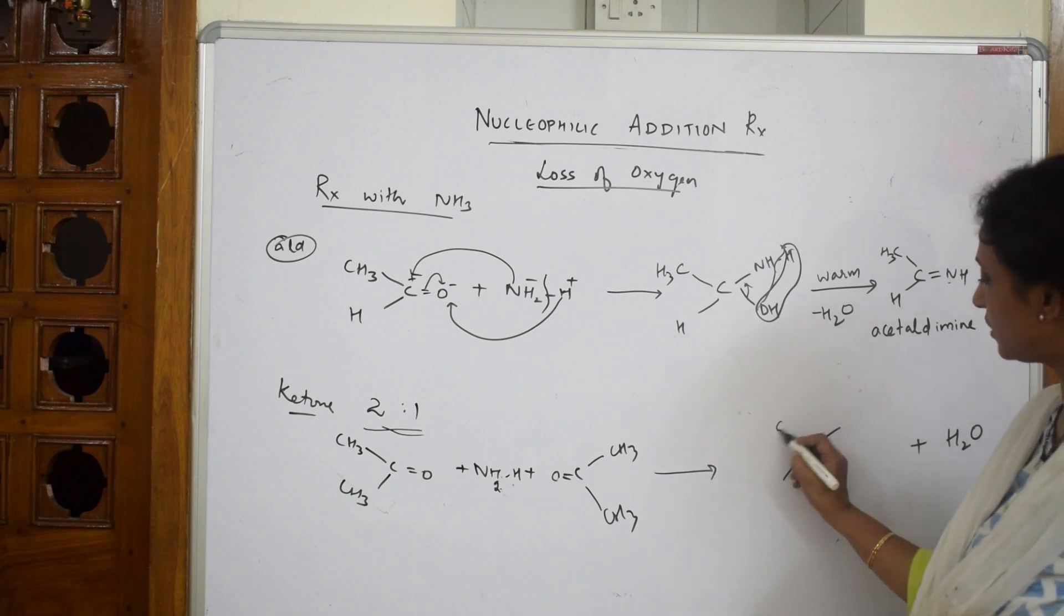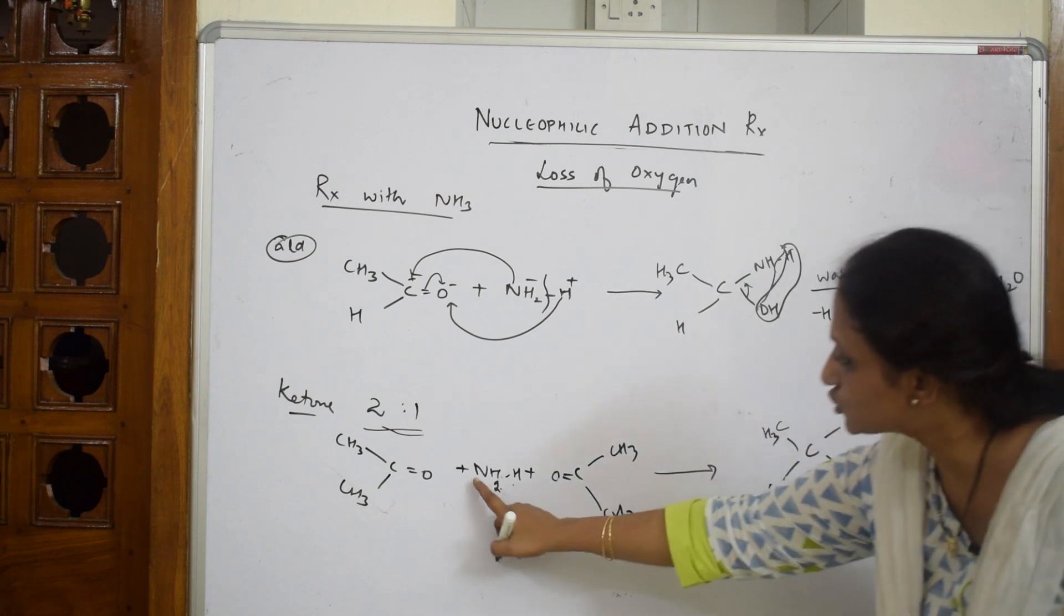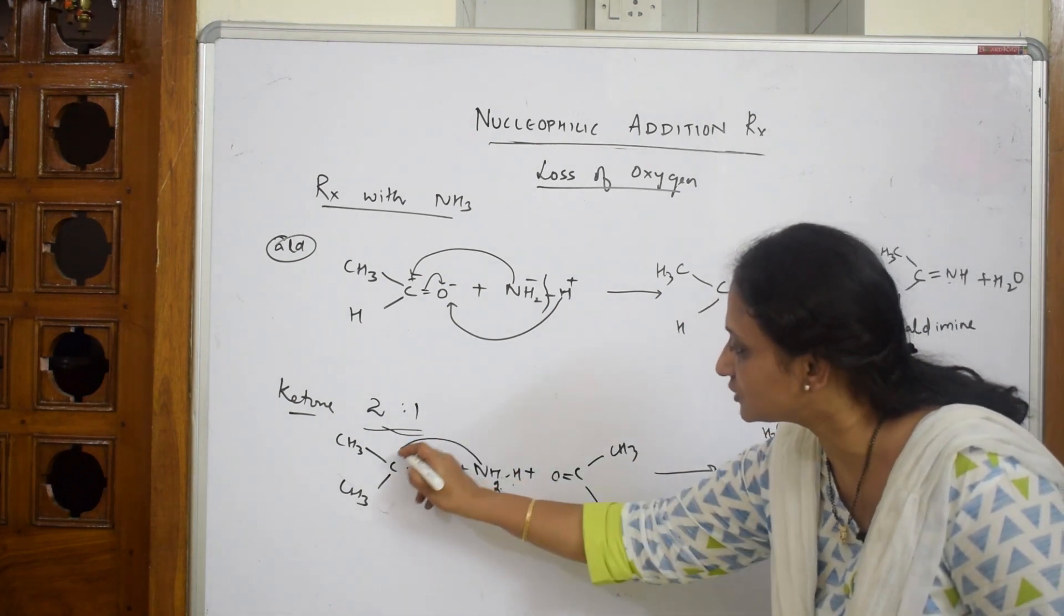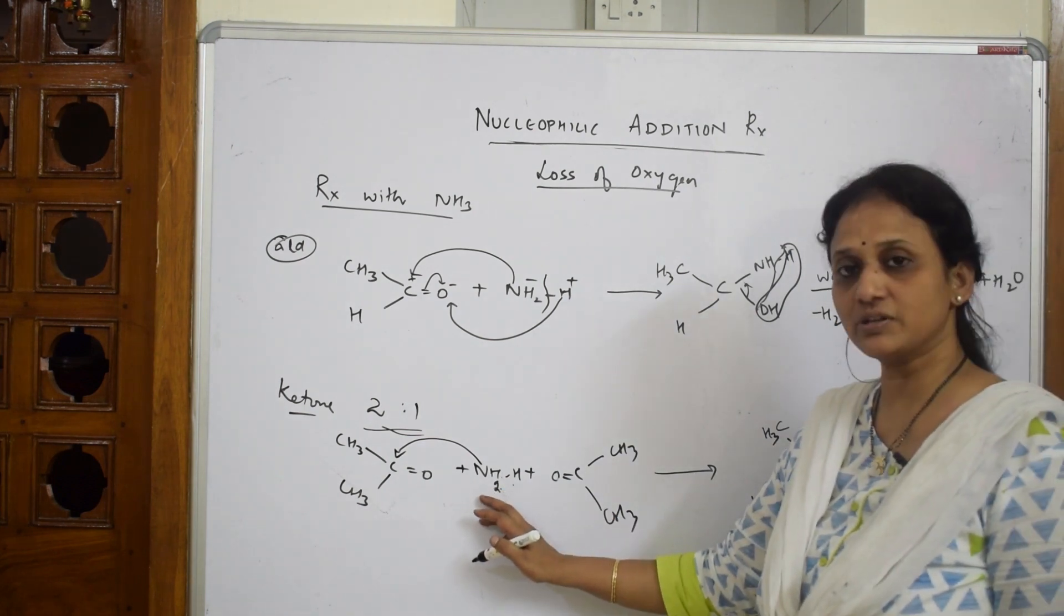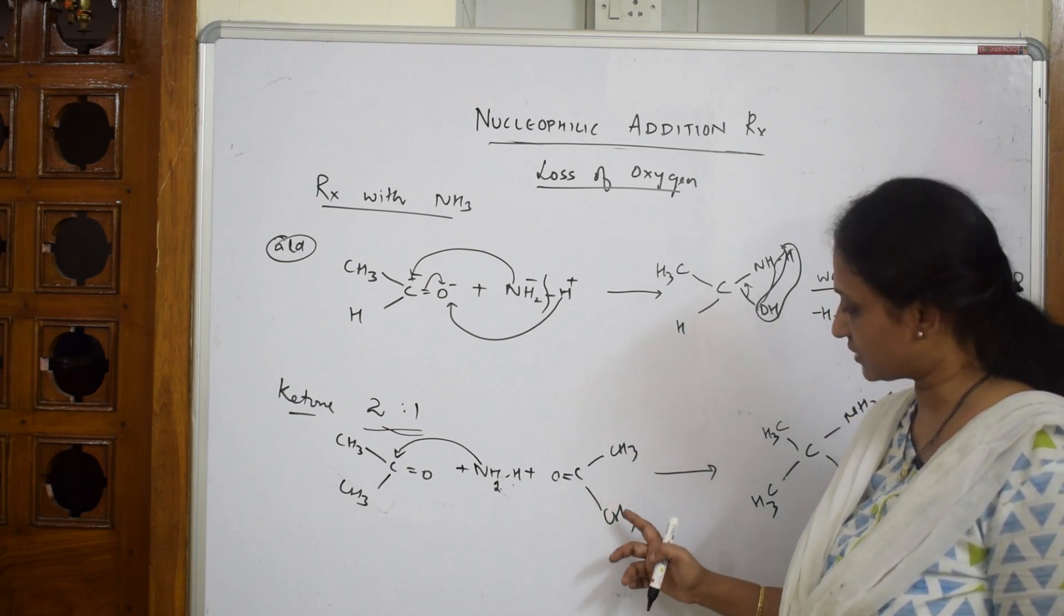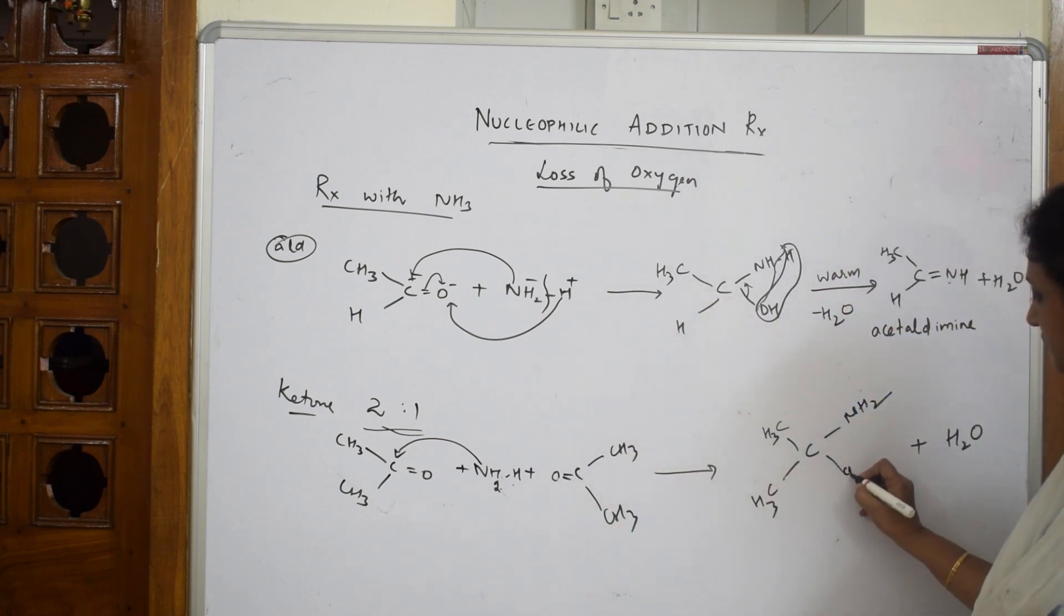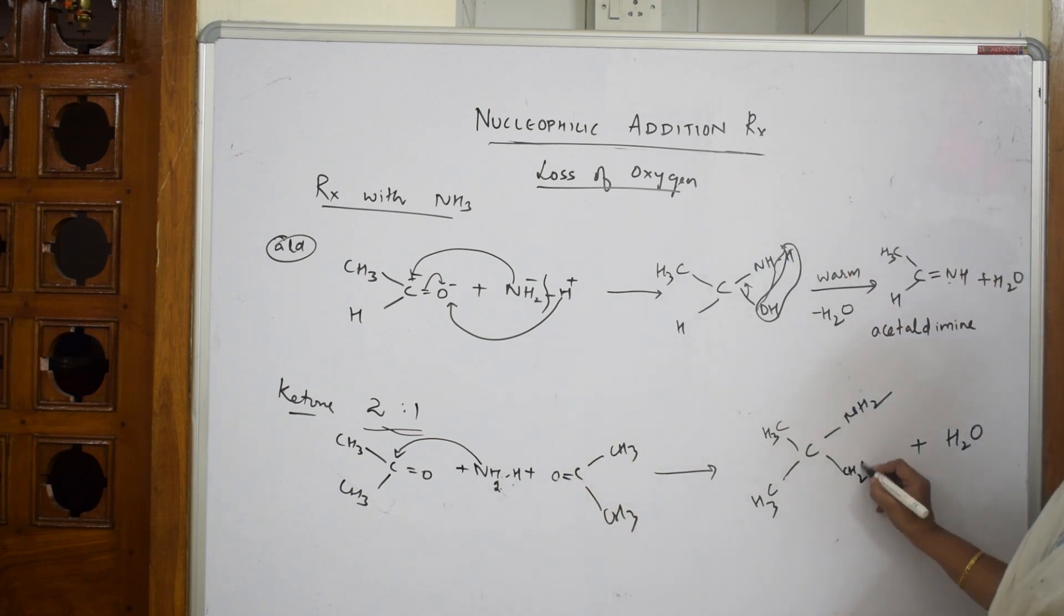What do I get? I get a compound with CH3. That NH2 will go and attack here. Water has already come out. What are we left with? Because one hydrogen is lost from here, this becomes CH2. There is CO group also and CH3 group also.